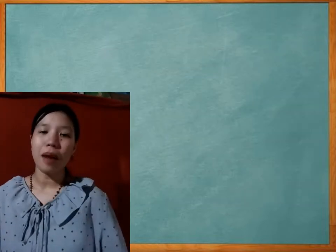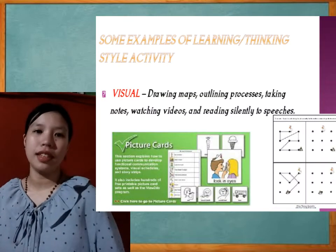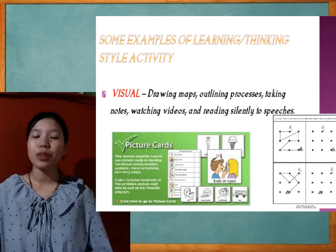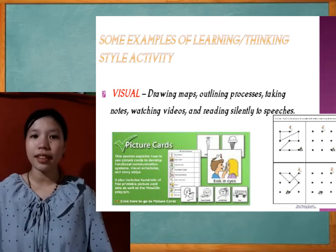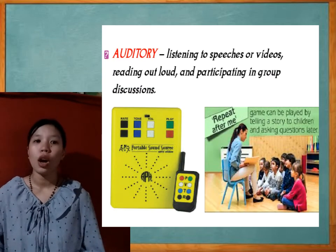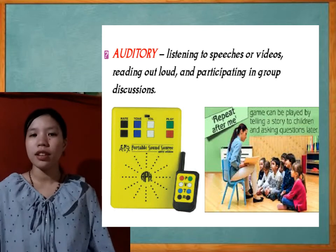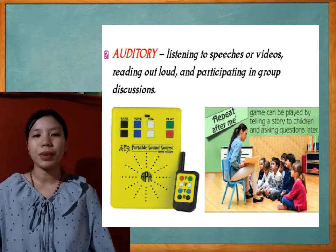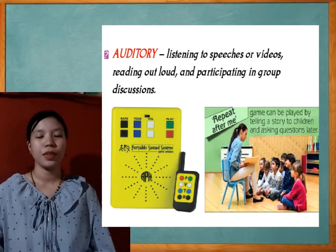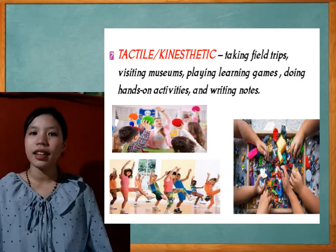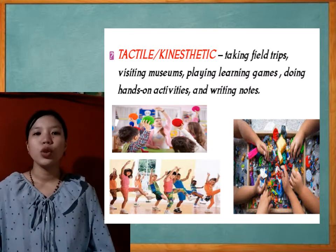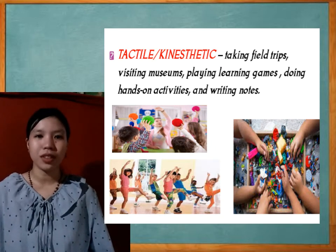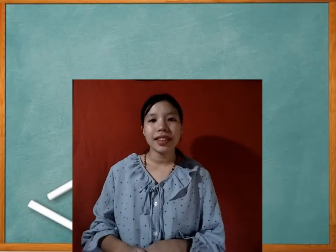Here are some examples of learning or thinking style activities. For visual: drawing maps, outlining processes, taking notes, watching videos, and reading silently. For auditory: listening to speeches or videos, reading aloud, and participating in group discussions. For tactile or kinesthetic: taking field trips, visiting museums, playing learning games, doing hands-on activities, and writing notes.